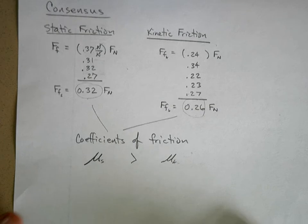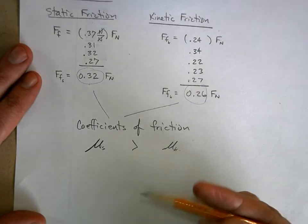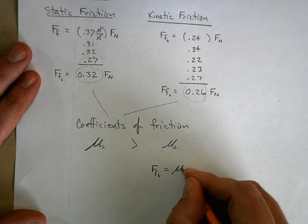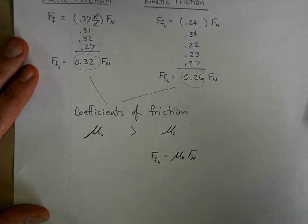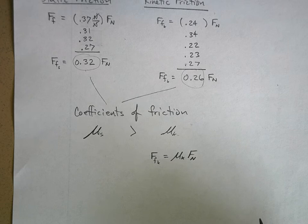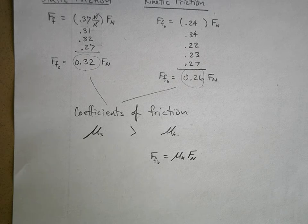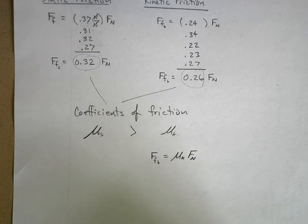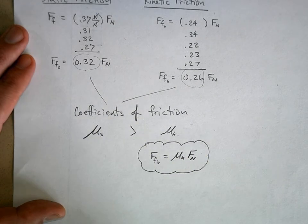Now we can write the equation for kinetic friction: the force of kinetic friction equals the kinetic coefficient of friction times the normal force, or F_k = μ_k × N. This formula has a lot of subscripts, but it's not complicated — the force of friction depends on the normal force, and the more you press those surfaces together the more friction you get. How much friction depends on the stickiness of the material — the greater mu is, the more friction you get. Add this to your equation list.